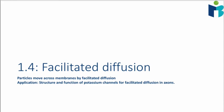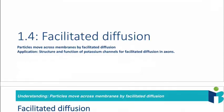1.4 Facilitated diffusion. In this video we're going to discuss facilitated diffusion and how it can be used to transport particles across plasma membranes. We're then also going to talk about how this process of moving things across a membrane can be applied to the potassium channels found in axons of a neuron.